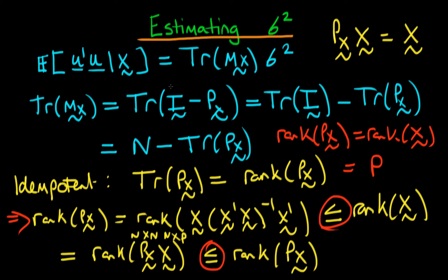Hence we can replace this expression up here, the trace of mx times sigma squared, by something else. So we can write that the trace of mx is equal to n minus p, and we can hence write an unbiased estimator for sigma squared. I can write it as sigma hat squared equals u prime u all divided through by n minus p.